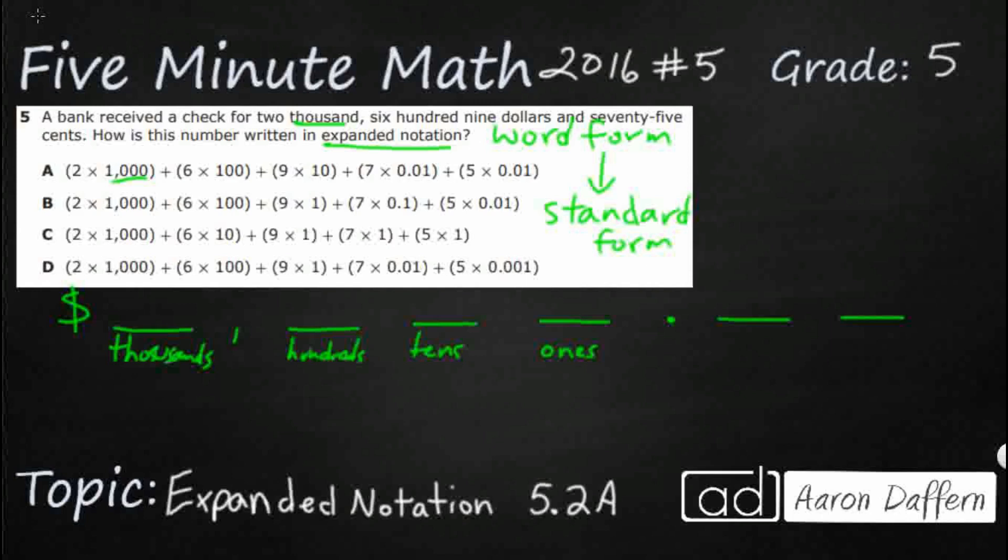So if we can imagine this decimal kind of being like a wall, the ones is always the one closest to the wall on the left side. But once we get smaller than one, then we get into tenths. All of our place values start having the THS, hundredths. Money doesn't have thousandths, but we know thousandths. And it goes so on and so forth.